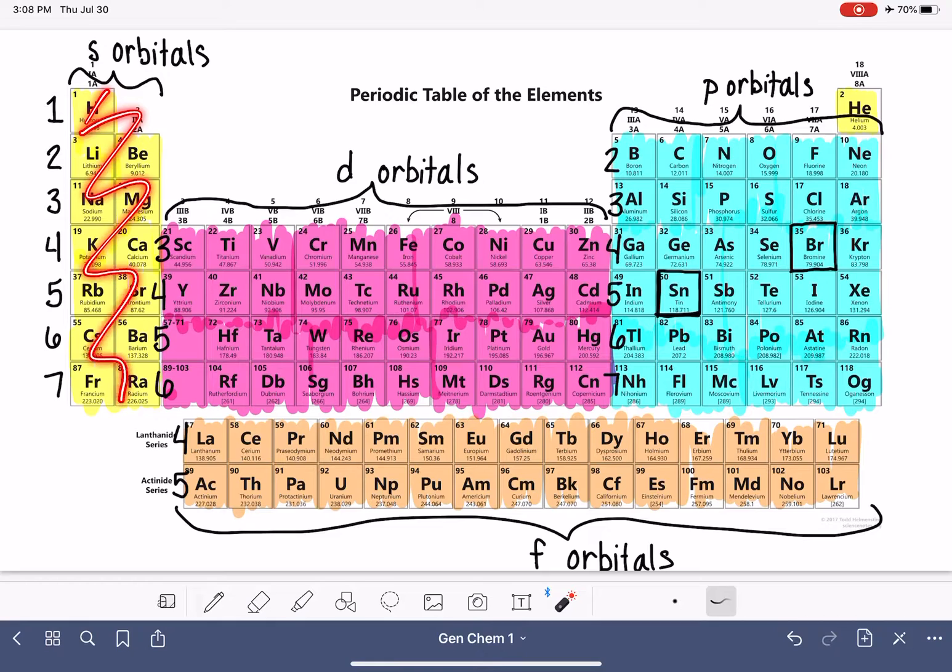All the blue ones represent the filling of p orbitals. The pink ones represent the filling of the d orbitals. And then I didn't have this in the last video, but down here in orange, this represents the filling of the f orbitals. And I also have the orbitals numbered on the side.